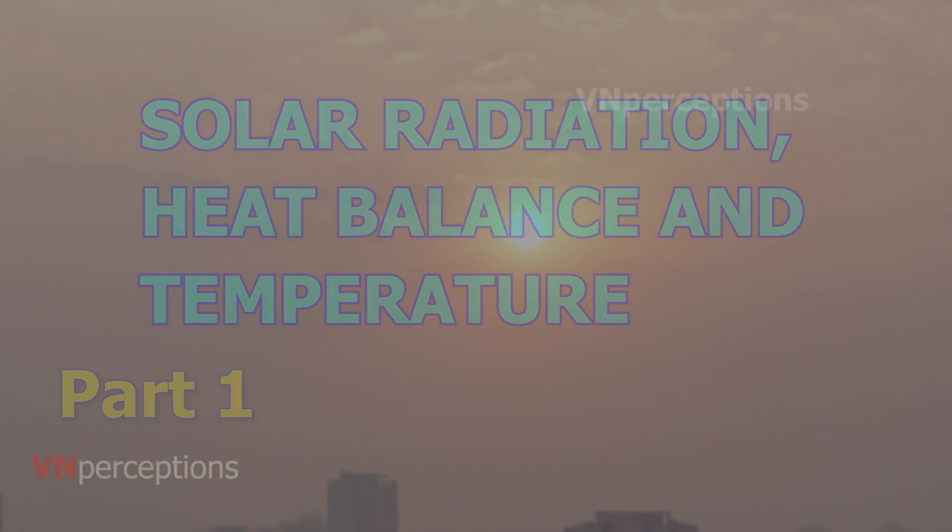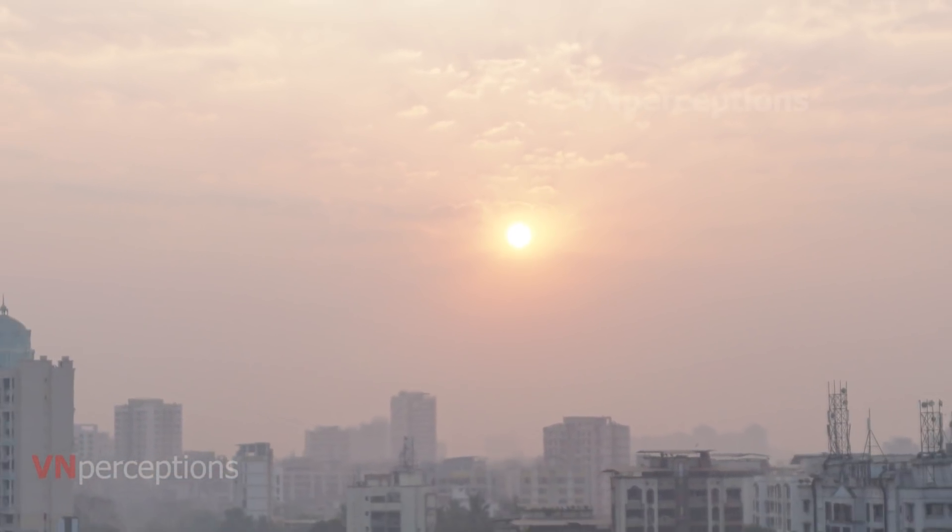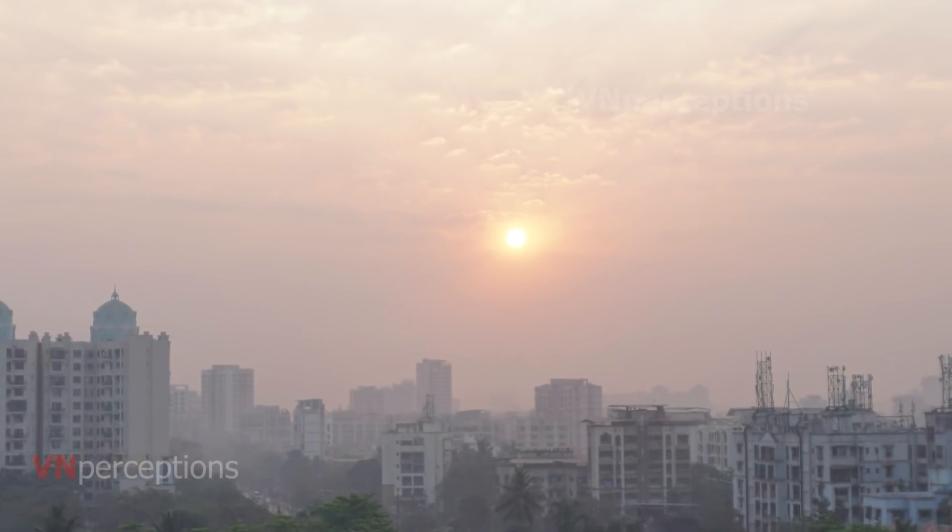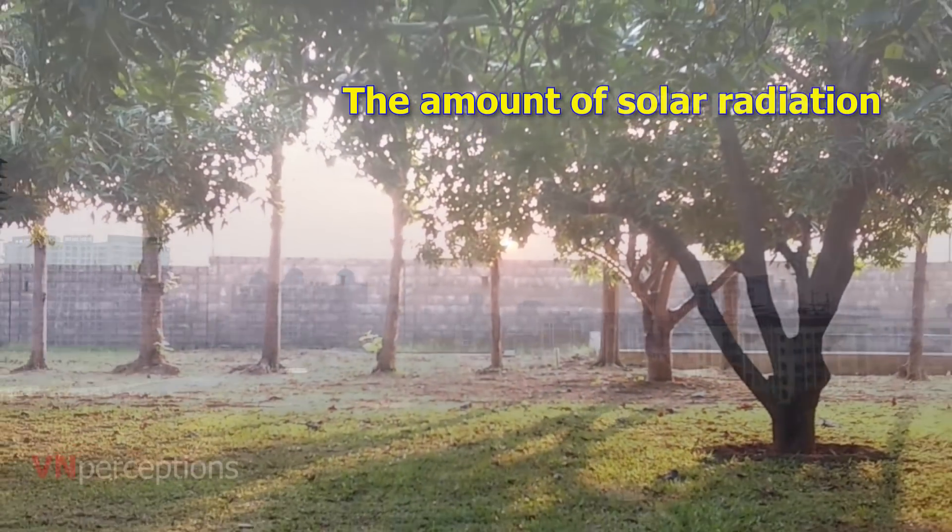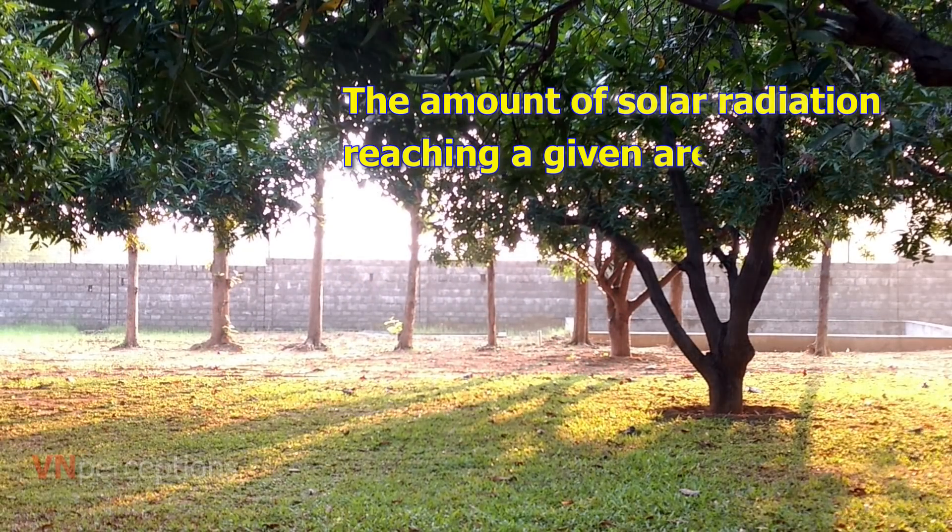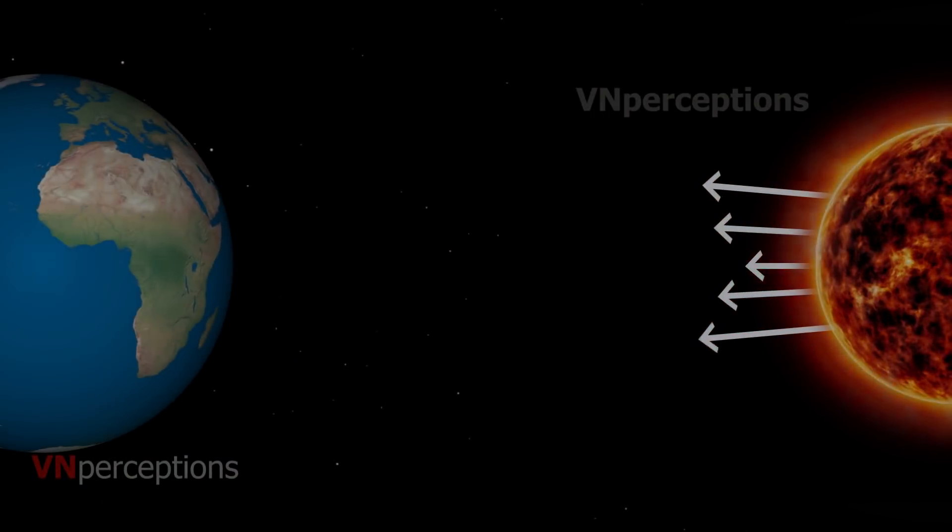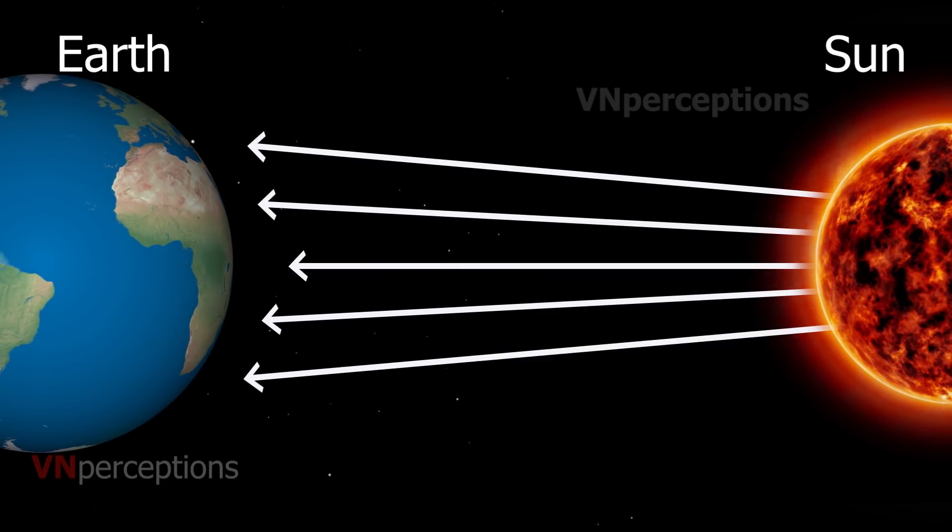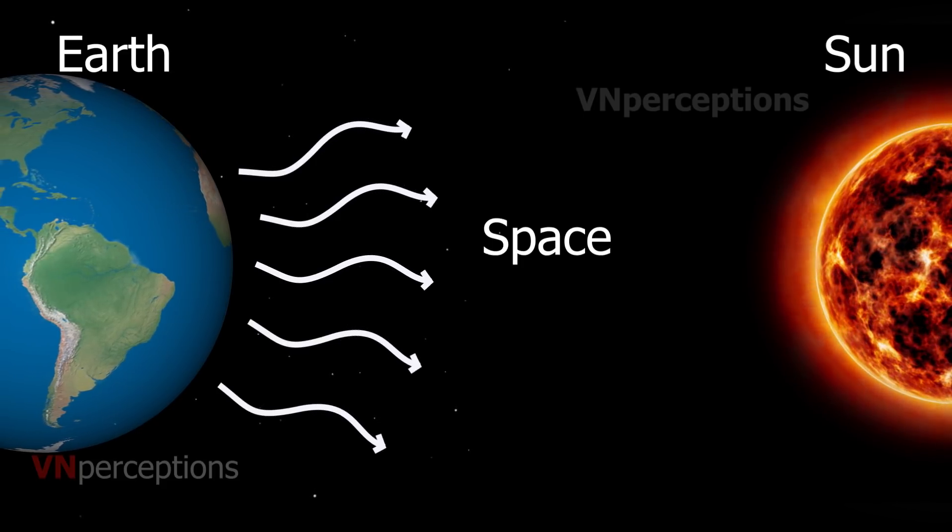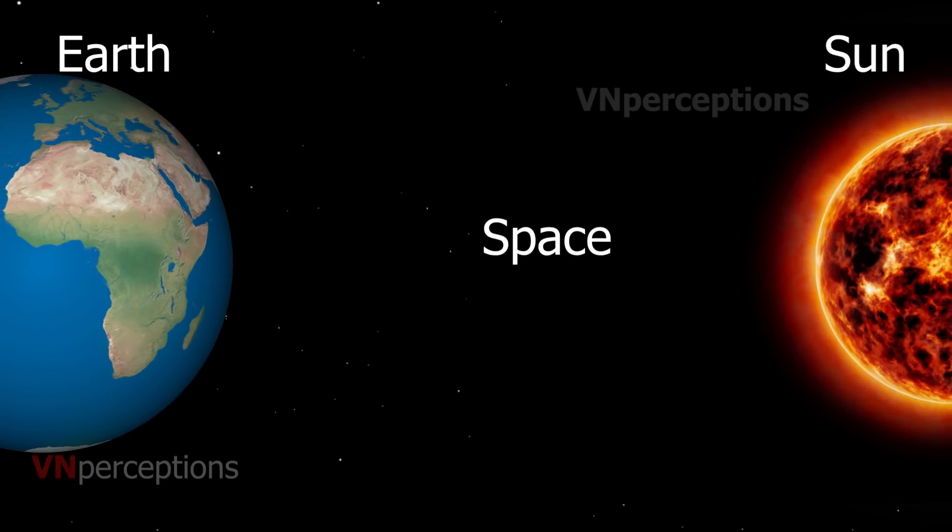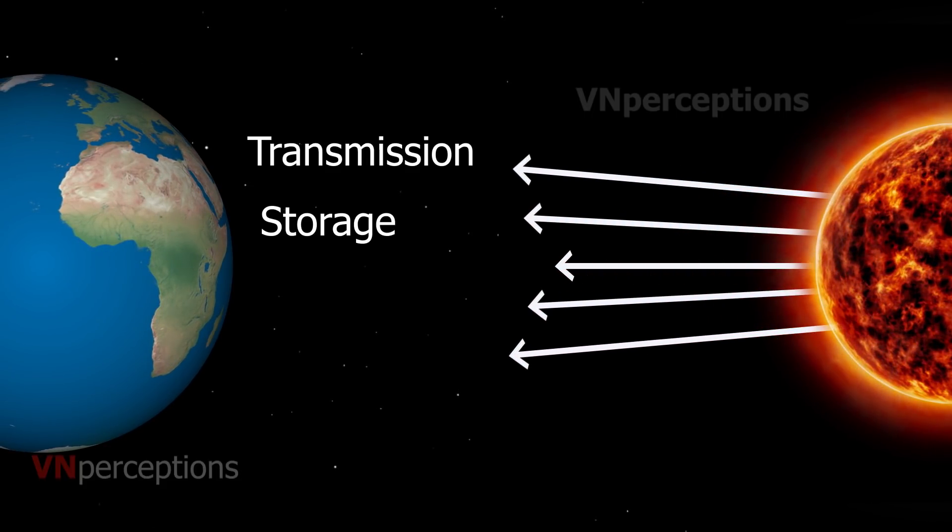The sun radiates heat and light energy in all directions, known as solar radiation. The amount of solar radiation reaching a given area is called insolation. The flow of energy from the sun to the earth and into space is a complex process that involves energy transmission, storage, and transport.